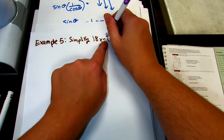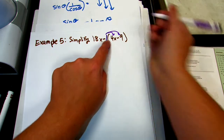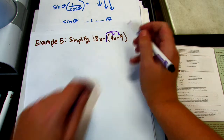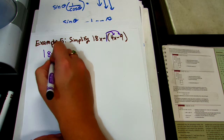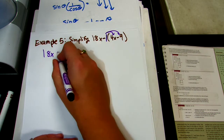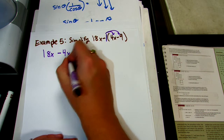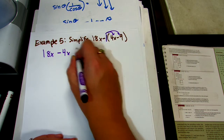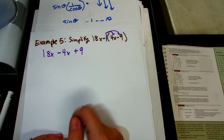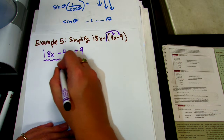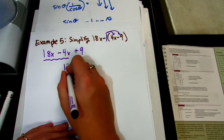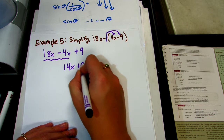Remember, there's always an imaginary 1 times anything, so we're distributing a negative 1. We have 18x; negative 1 times 4x is negative 4x; negative 1 times negative 9 is positive 9, since two negatives make a positive. We can combine like terms: 18x minus 4x gives us 14x plus 9.